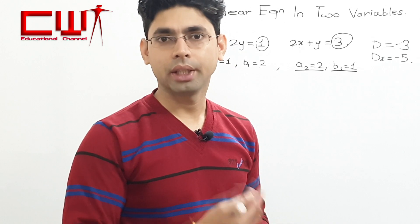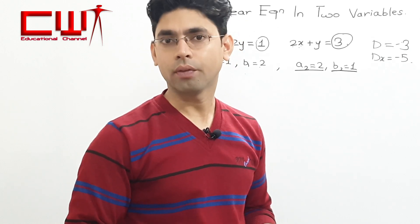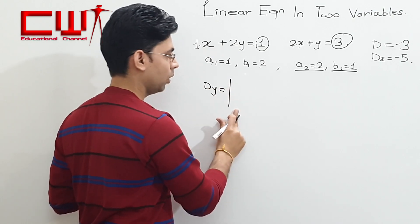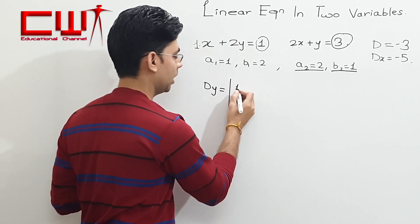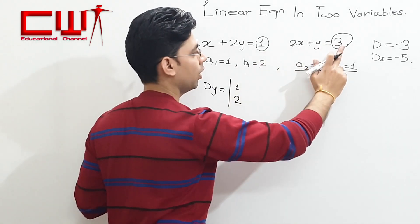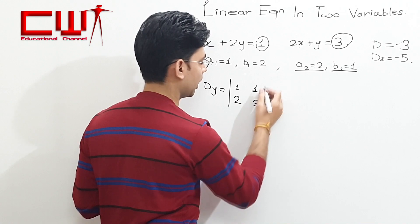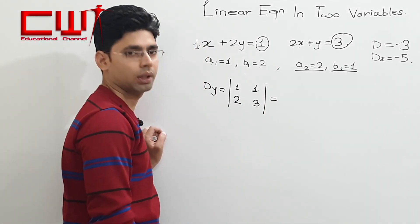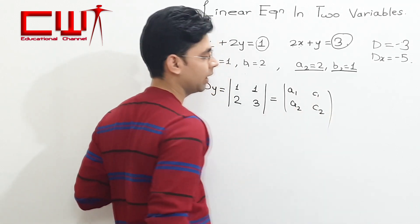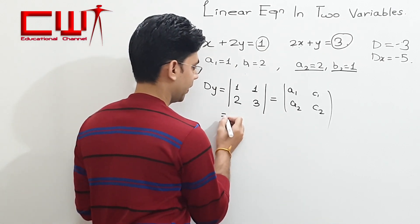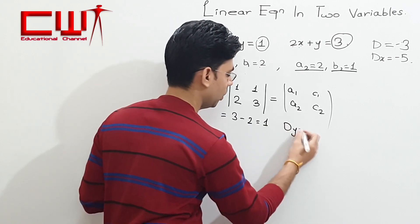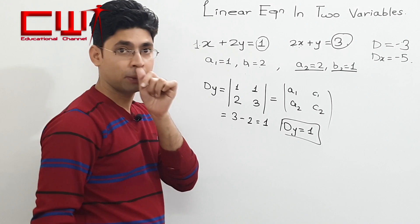अब determinant Dy निकालना है। Dy में x के coefficients a1 और a2 — यानी 1 और 2 — as it is आएंगे। y के coefficients b1 और b2 को C1 और C2 से replace करेंगे, जो हैं 1 और 3। Dy का basic determinant है: a1 a2 / c1 c2. Solve करें: 3×1 = 3, minus 2×1 = 2, तो Dy = 1.